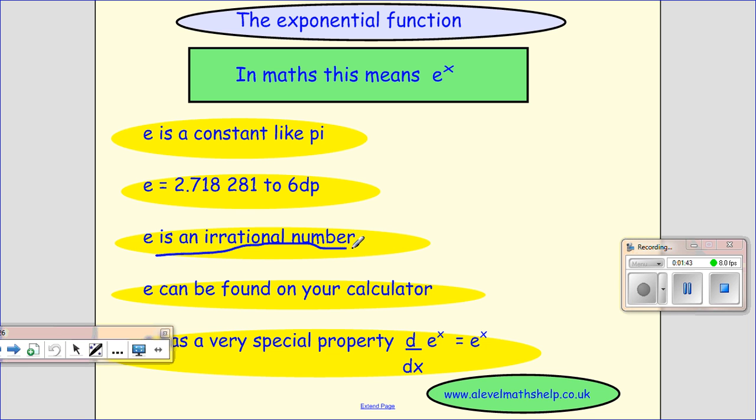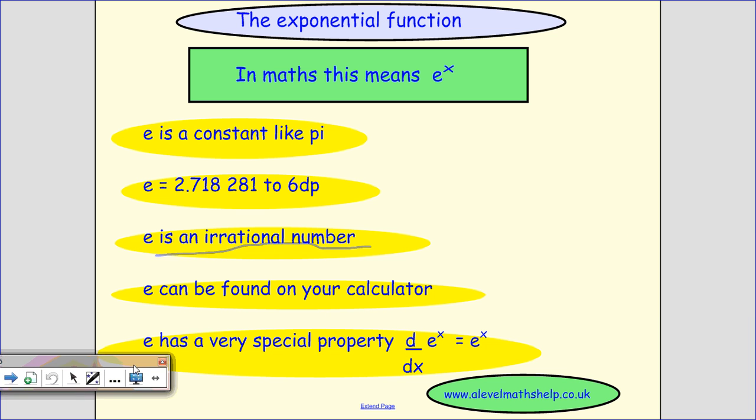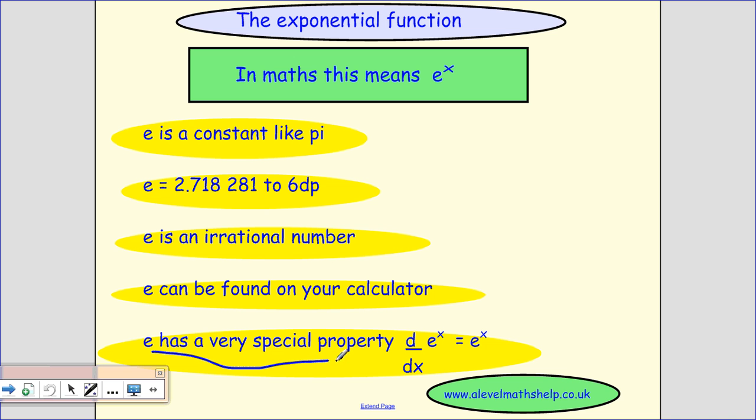So what does an irrational number mean? It means you can never write it as a fraction. You can find it on the calculator. And a very important thing about e: it has a very special property that when you differentiate it, you just get e to the x. And we will talk about that when we do the video on differentiation.